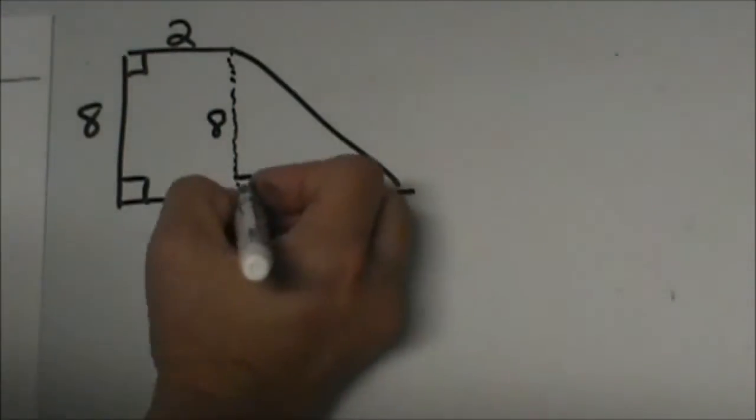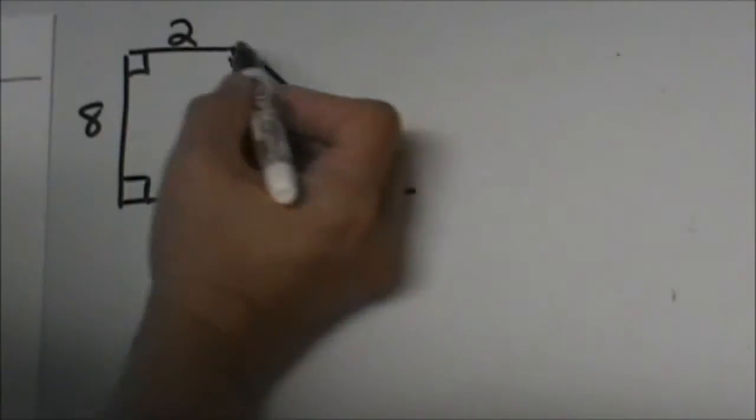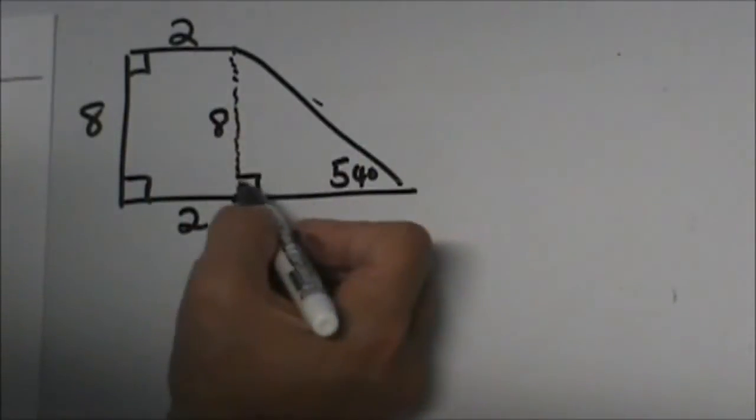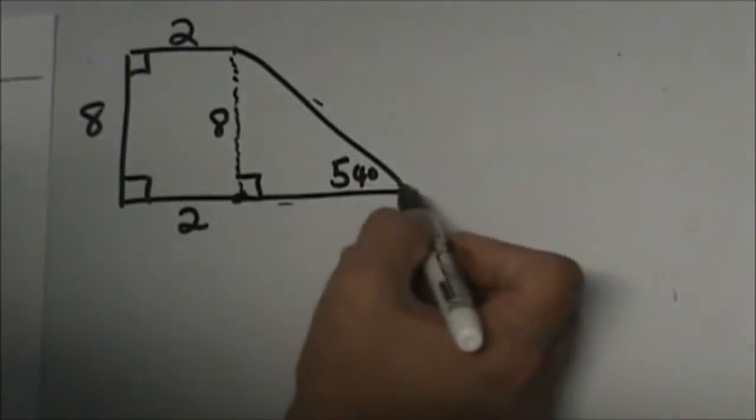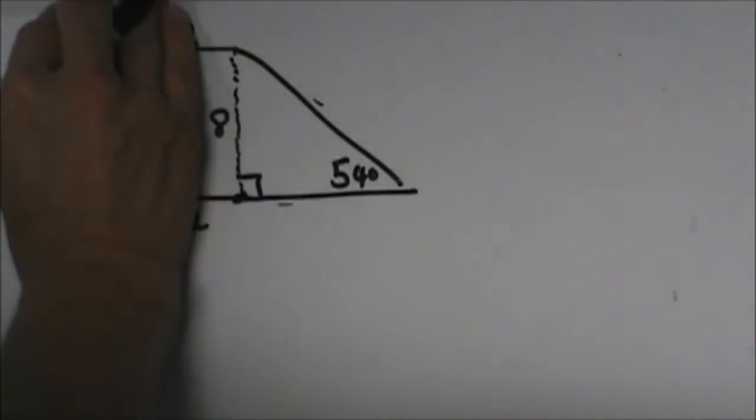So now I can solve for one of two sides. I can solve for this hypotenuse of this triangle or I can solve for this leg of this triangle. Let's cover this up for a second and just focus on the triangle. I'm going to go for the hypotenuse first.